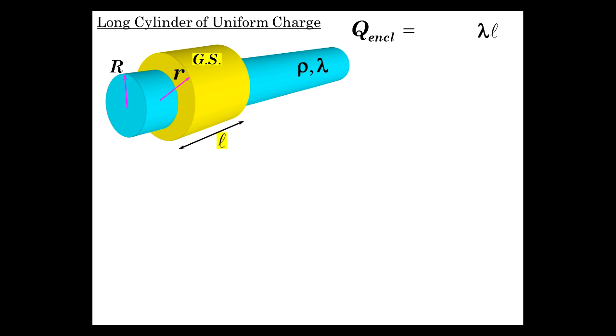Well, how much charge is enclosed? Let's express it two ways. Lambda L, so the linear charge density times the length, which is also the volume charge density times the volume. So whatever the volume is of the cylinder that's enclosed by this Gaussian surface, and that is volume charge density times pi R squared L. Pi big R squared times L. So that would be the total charge enclosed by the Gaussian surface. And just doing a little algebra here, lambda L equals rho pi R squared L. So we can solve for rho, lambda over pi R squared. That'll come up in a moment.